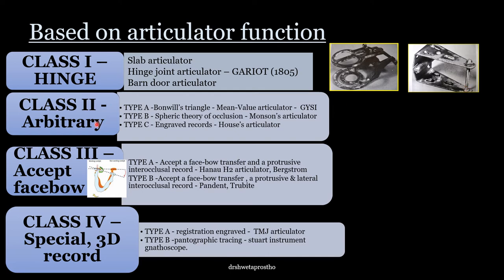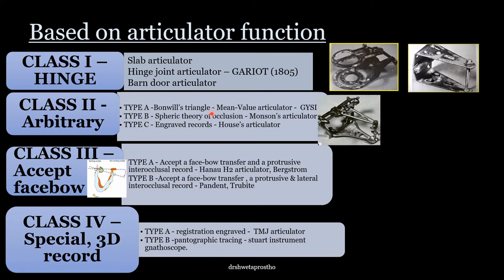Class 2 is arbitrary. These articulators permit both horizontal and vertical movement but do not accept the face bow record — meaning the maxilla is not oriented in relation to the temporomandibular joint and the cranium. They are called 'arbitrary' because they are based on average values, theories, or records. Type A is the mean value articulator, based on Bonneville's triangle and average values. This is the Bonneville's articulator — the mean value articulator used for preclinical and clinical cases of complete denture — and it was given by Geisy.